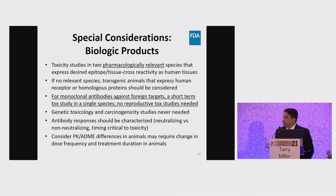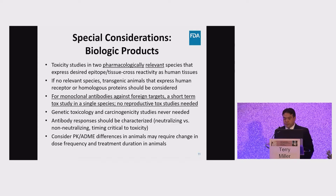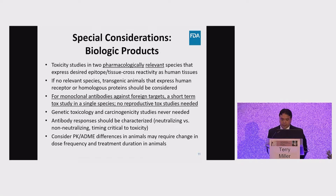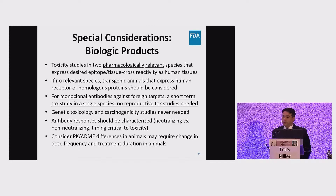For biologic products, toxicity studies should be conducted in two pharmacologically relevant species. If no relevant species exists, then transgenic animals or homologous proteins should be considered. The biologic products we most typically see in our division are monoclonal antibodies directed against foreign targets, such as a bacterial toxin. In these cases, a short-term toxicity study in a single species, preferably a rodent, is acceptable. No reproductive toxicity studies are required, and generally gene tox and carcinogenicity studies are not needed for biologic products. In animal studies, you should characterize any antibody response to determine if these responses are neutralizing to the product, and consider any PK or ADME differences in animals that may require a change in dose frequency and treatment duration.